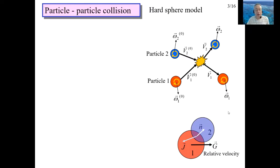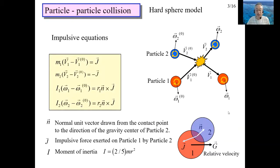The collision model used in this lecture is the hard sphere model. Consider two spherical particles colliding. Translational velocity v and angular velocity omega are considered. Subscripts 1 and 2 denote the particles. The superscript 0 means pre-collision velocity; no superscript means post-collision velocity. The radii of particles 1 and 2 are R1 and R2 respectively.